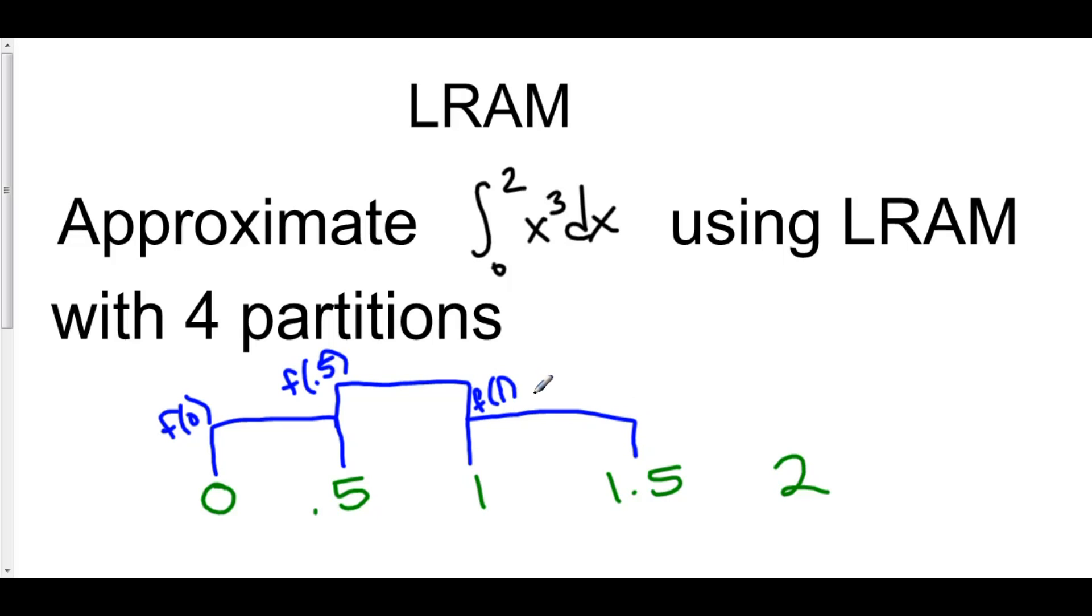And then finally, my last rectangle goes from 1.5 to 2, and since this is a left Riemann approximation, I'm going from 1.5 up to the top right here. So that will be f of 1.5.